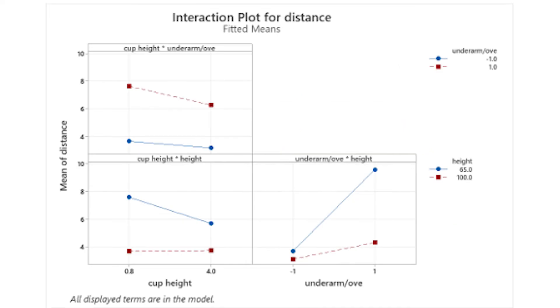Looking at the interaction plot for distance, we see that non-parallelism indicates an interaction. This chart indicates that either two of the X in this experiment have interactions. And the interaction between the posture throwing technique of underarm or overarm and height is significant.